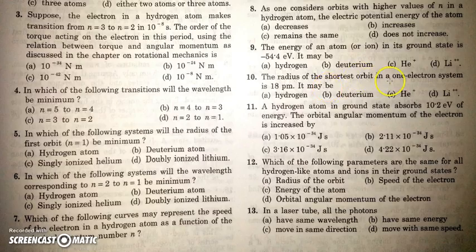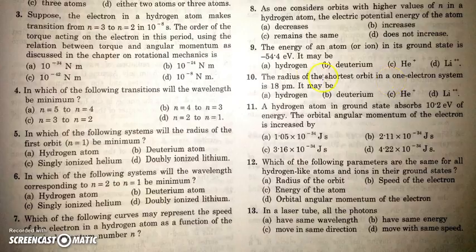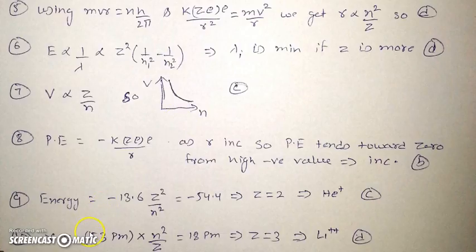The radius of shortest orbit in one electron system is 18 picometer. Means for n equal to 1 radius is 18 picometer in some atom. And the atom will be. We know that radius of first orbit of hydrogen atom is this. So for any other atom having atomic number z. We can say that radius is 53 picometer n square by z. So as n is given as 1 if we put z equal to 3 we will get the required value which is 18 picometer.